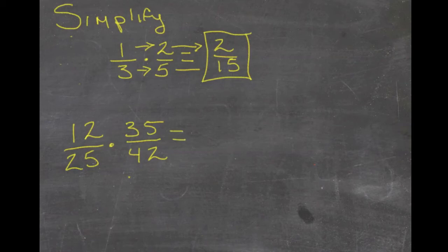For our second example, we're going to do slightly differently because 25 times 42 is kind of hard to do in your head. So we're going to break these numbers down into smaller pieces first.